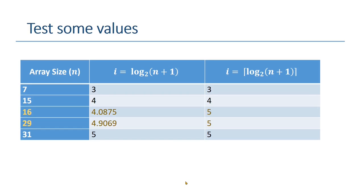Let's try out some more values. In the previous example, we were getting complete passes. What if the array size is 16 or 29? In this particular case, we will have just one more pass to cater for these additional items.